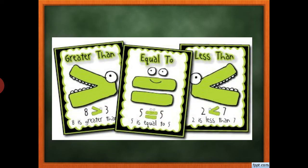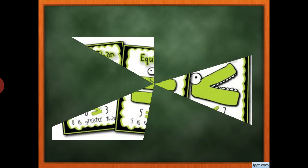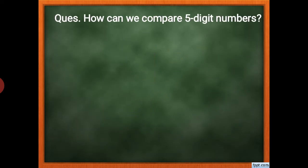For example: 8 and 3 — 8 is bigger, so the mouth opens towards 8, meaning 8 is greater than 3. Next, 5 equals 5, so we use the equal to sign. And for 2 and 7 — 7 is bigger, so the mouth opens towards 7, meaning 2 is less than 7.